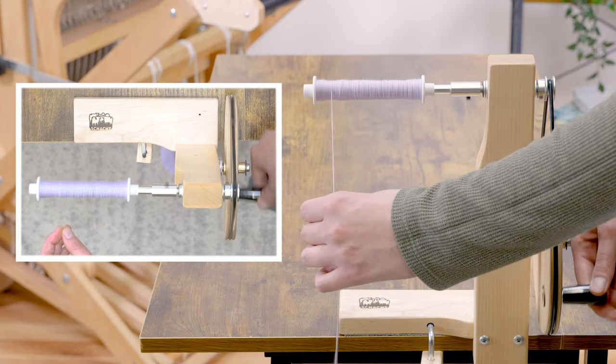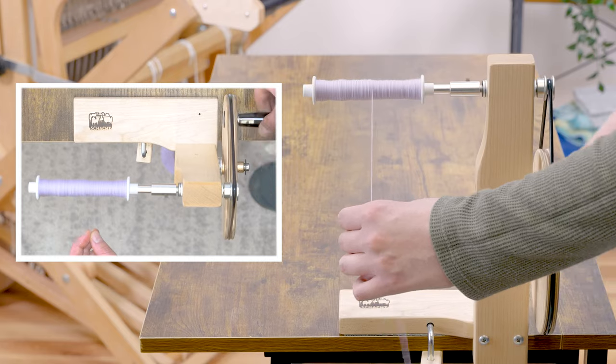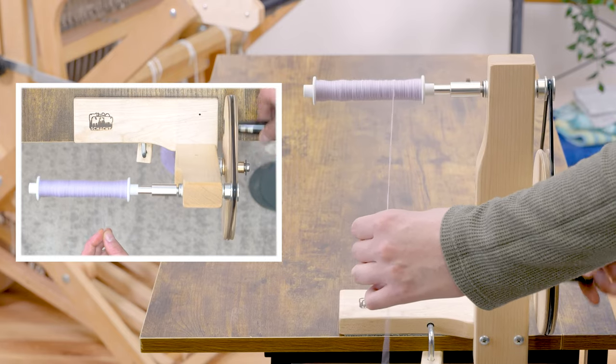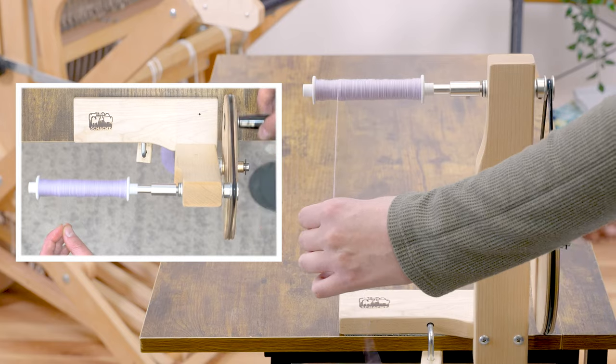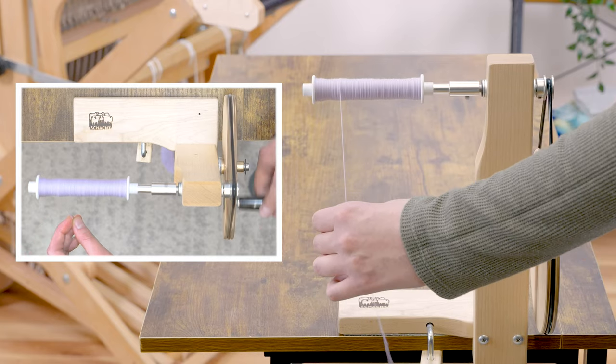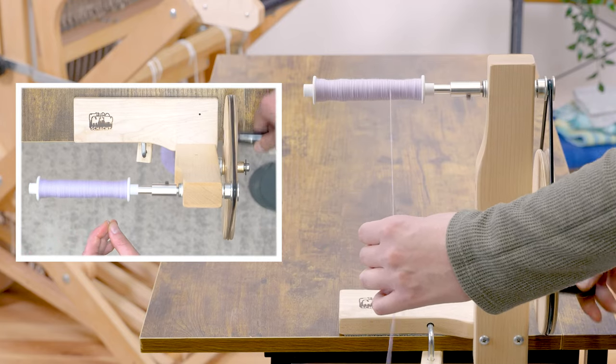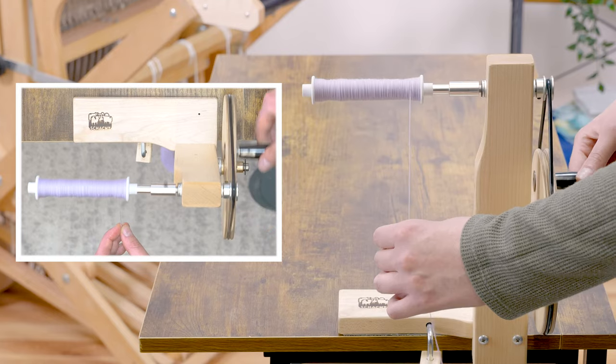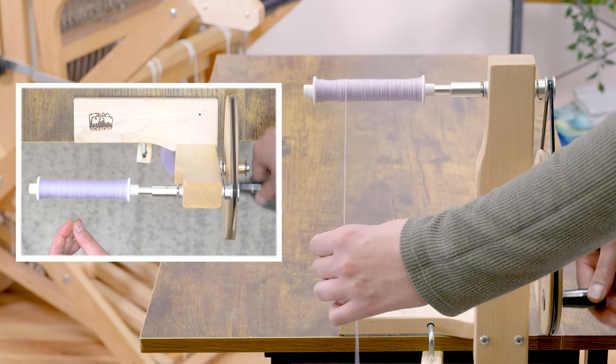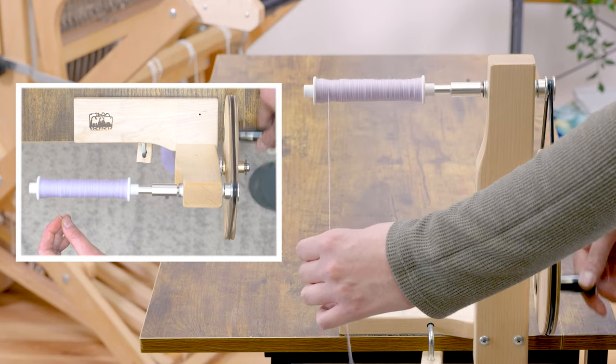I want to fill the bobbin basically to the top of the plastic sides. Too much more than that and you may have some issues with it winding off. And with a slim or a mini boat shuttle there isn't much extra room. So filling it just to there is a good idea.